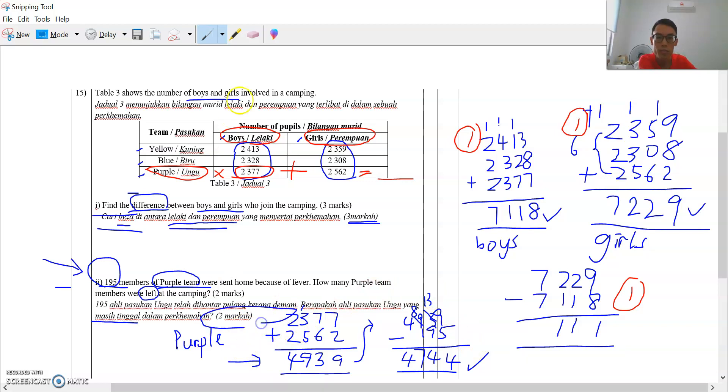So 2 marks for this question. 1 mark you must show that you add up the boys and the girls of the Purple Team. And the second mark you take the total of the Purple Team minus the 185 who were sent home. Then these are the ones staying left in the camp.